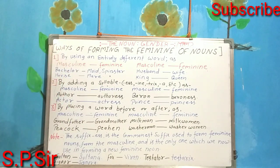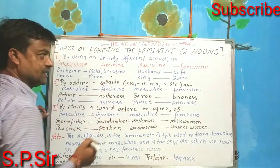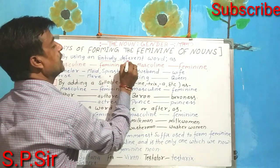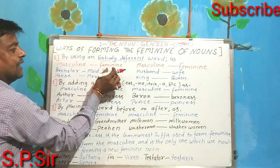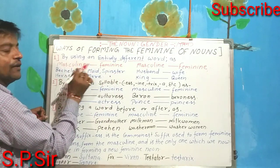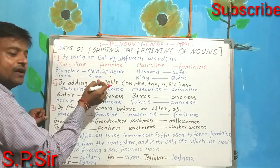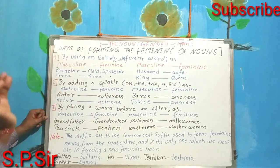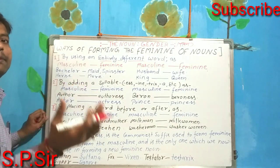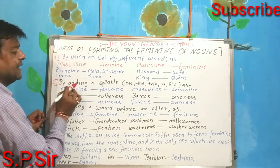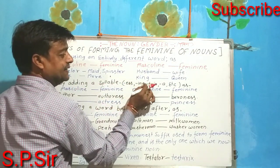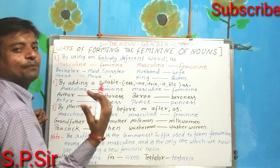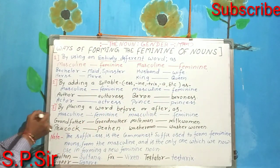Point number one: by using entirely different words. This means we do not add any letter to the existing word — instead, an entirely different word is used. For example: bachelor/spinster, horse/mare, husband/wife, king/queen. These show entirely different words used for masculine and feminine.